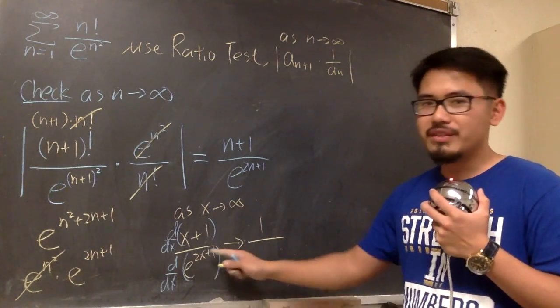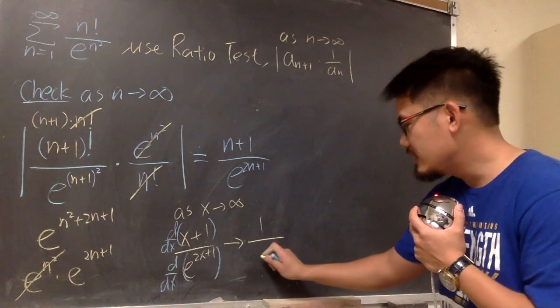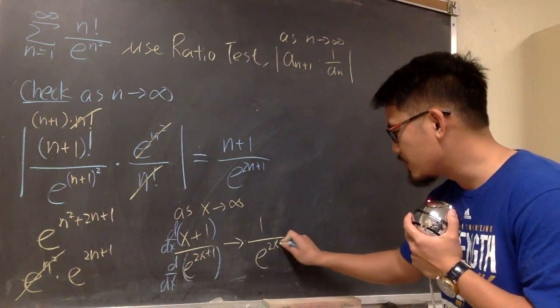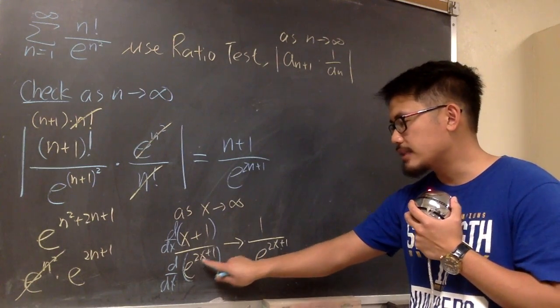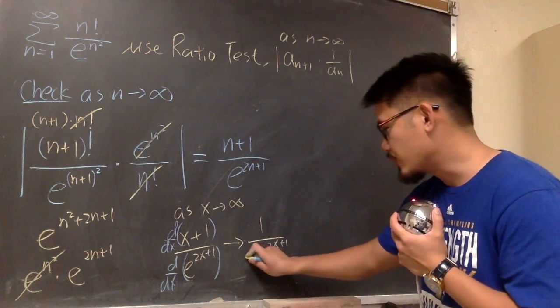Over, what's the derivative of this? e to the something is just always e to the something to begin with, right, for the derivative. But then, you look at here, the derivative of 2x+1 is 2, so we multiply by 2.